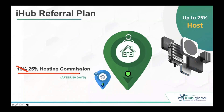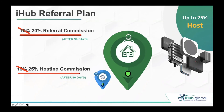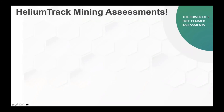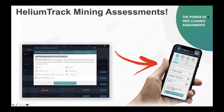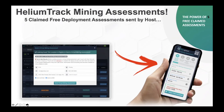The host gets 15% for the first 90 days with the opportunity to go from 15% to 25%. The referrer can go from 10% to 20% after 90 days — that's a huge increase. You can get 20% on everybody that you refer. How do you get that pay increase? It all comes with Helium Track mining assessments. The power of five free claimed assessments — give away five assessments and you're off to the races. You have 10 credits in the free version, so you can send assessments to your friends and family and get that 10% increase with just five claimed free deployment assessments.